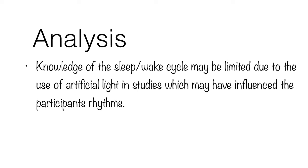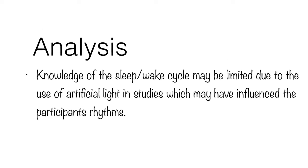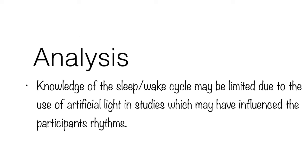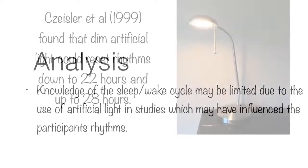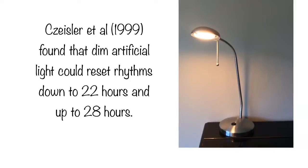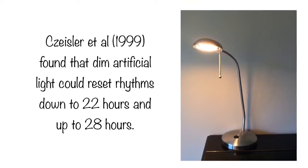Our knowledge of the sleep-wake cycle however may be limited because the studies used artificial light so the participants didn't bump into each other and could function. The lights were only switched on when they were already awake but this might still have influenced their rhythms. Research has supported the idea that artificial light can reset rhythms and so the studies may be measuring partial rather than complete isolation and as such may lack internal validity.